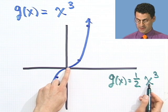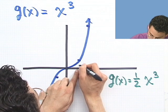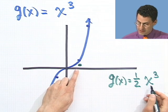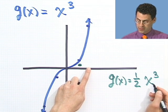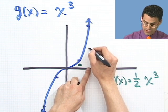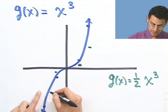So at 0, I still am at 0. At 1, I used to be at 1, but now I'm going to be at 1 times 1 half, so it's at 1 half. You see how the functions fall? If I put in 2, instead of being at 8, I'm now going to be at 4. So I'm way over here. And similarly down here, I'm going to be at minus 1 half, and here I'm going to be at minus 4.